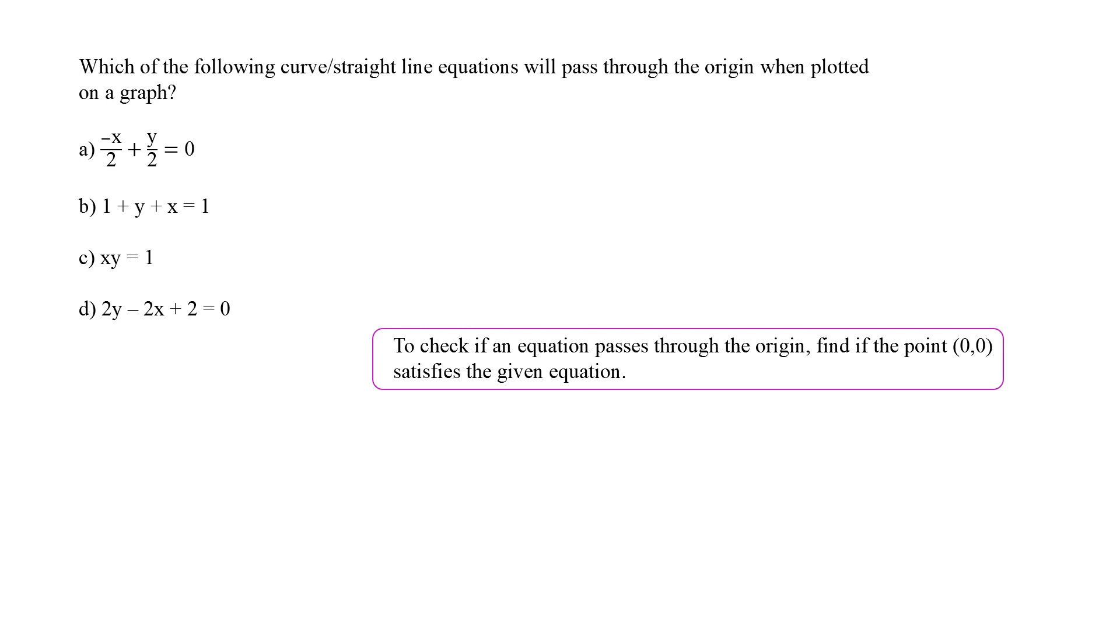Option A and option B are the correct answers. For example, in option B, 1 plus 0 plus 0 is equal to 1. That is LHS and RHS are equal. The equation is satisfied. But, in case of C, 0 into 0, that is 0 is equal to 1, which is not true. So option C is incorrect. Here, option A and option B are the correct answers.